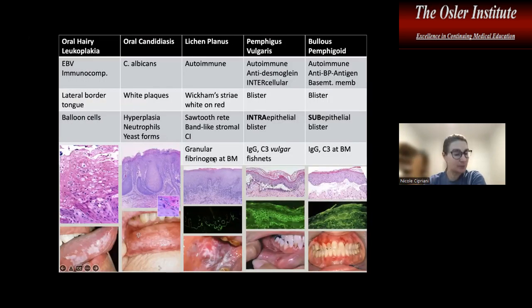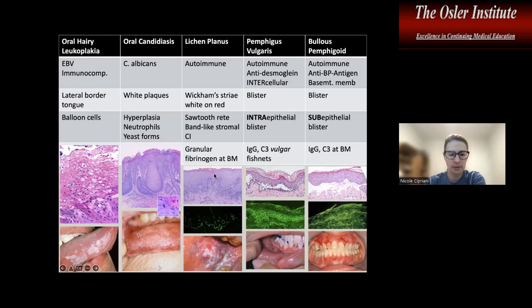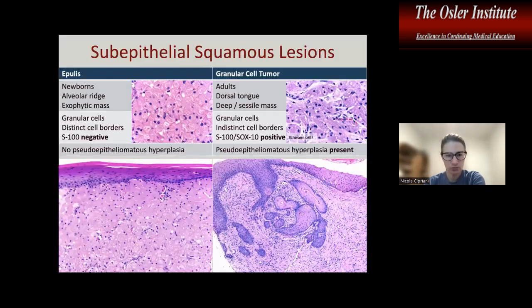I've tried to provide comparison charts for your use as comparative references between the cases. Moving into the stromal lesions — these are lesions that don't necessarily involve the epithelium, but really involve the stroma below the epithelium.